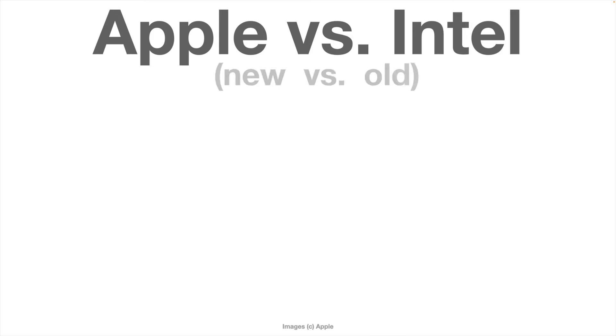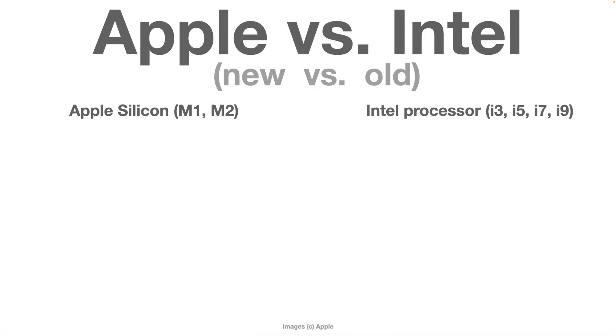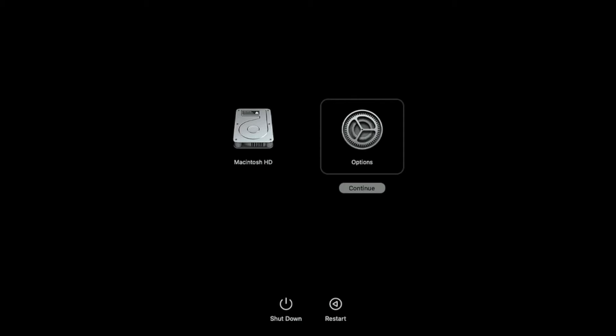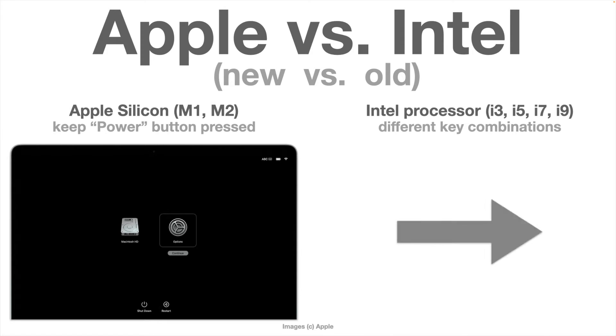Before we start, we have to differentiate between new Macs with Apple Silicon — meaning M1 or M2 chips — and older Macs with Intel chips like i3, i5, i7, or i9. Depending on which Mac you have, there are different shortcuts. For all new Macs with Apple Silicon, just keep the power button pressed during start and you'll see the startup screen with a gear showing 'Options.' Many shortcuts Intel Mac users use separately are behind this gear.